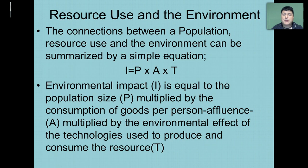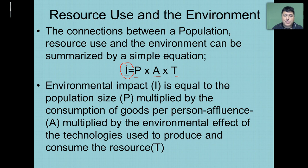The connection between population, resource use, and the environment can be summarized by a simple equation: I equals P times A times T, where I is the environmental impact. It's equal to our population size times our affluence — the amount of goods we can consume per person — as well as our technology, the technology we have in order to produce and consume that given resource.